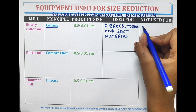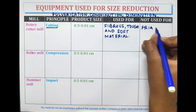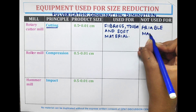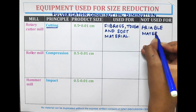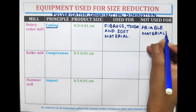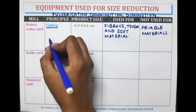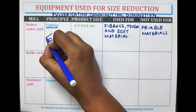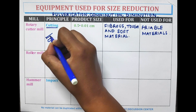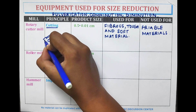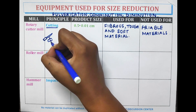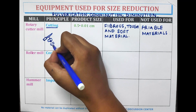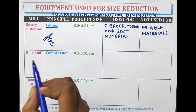The rotary cutter mill is used for size reduction of fibrous, tough, and soft materials. It is not used for friable materials. In cutting, the material is reduced in size by the use of sharp blades, cutting it into small pieces.